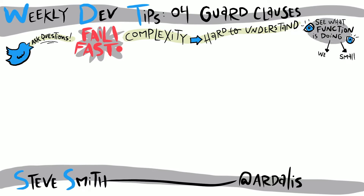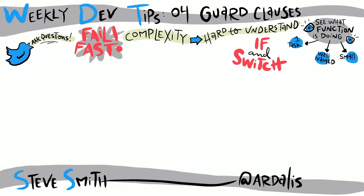One factor that's constantly working against you as you try to keep your functions manageable is conditional complexity — that is, if and switch statements primarily. When these are not properly managed, these two constructs can quickly cause functions to shift from simple and easy to understand to long, obtuse, and scary.